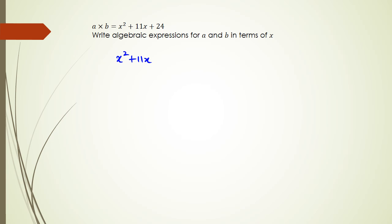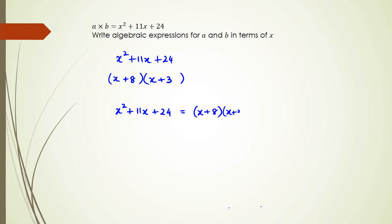So if you have x squared plus 11x plus 24, you want to factorize it. You're looking for two numbers that multiply to 24 and add up to 11. That's going to be 8 and 3, so x squared plus 11x plus 24 equals x plus 8 multiplied by x plus 3.